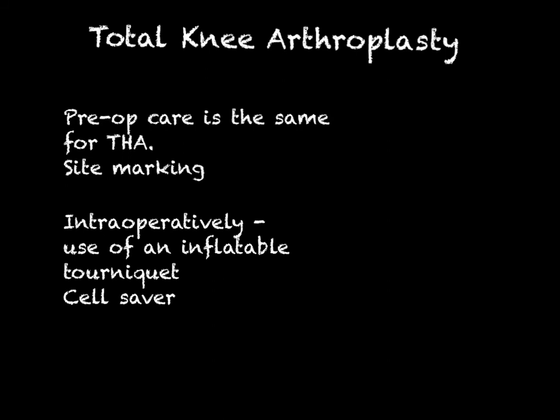Total knee arthroplasty is the last section of Unit 8, and it's pretty similar to total hip. Pre-op care is basically the same — timing the surgery, antibiotic protocol, showering with special wipes, maintaining NPO status. Site marking should occur on any procedure with laterality. Even in people with pain in both knees, it's common to replace one at a time, because it makes ambulation much easier if you have one strong leg.